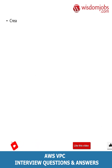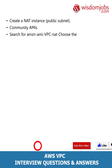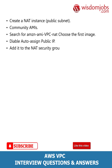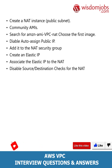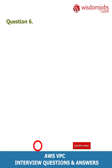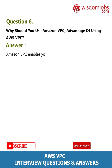Create a new security group for the NAT instance; add HTTP and HTTPS inbound rules that allow traffic from the private subnet's IP. Create a NAT instance in the public subnet using community AMIs — search for Amazon VPC NAT and choose the first image. Auto-assign a public IP and add it to the NAT security group. Create an elastic IP and associate the elastic IP to the NAT. Disable source/destination checks for the NAT. Add the NAT instance as a route to the initial VPC route table.